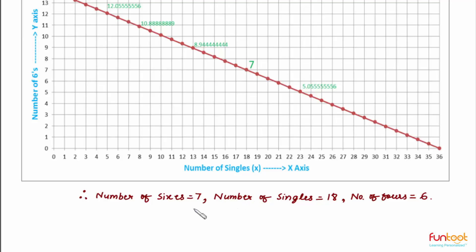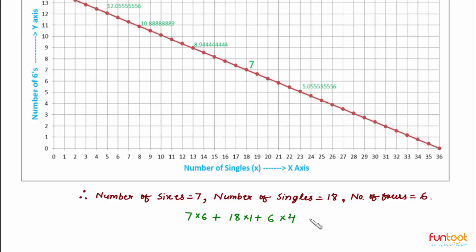We can verify our answer: 7 sixes gives 42 runs, 18 singles gives 18 runs, and 6 fours gives 24 runs. Adding these together, 42 plus 18 plus 24 indeed equals 84.